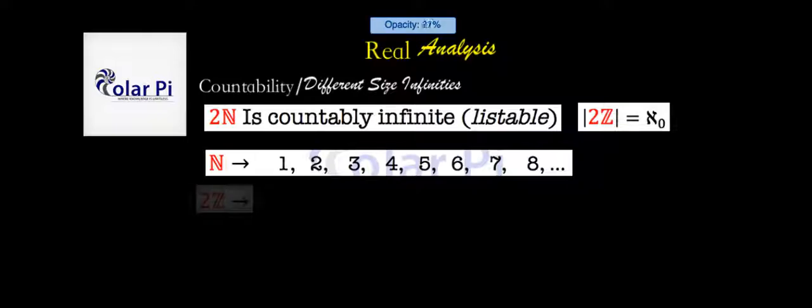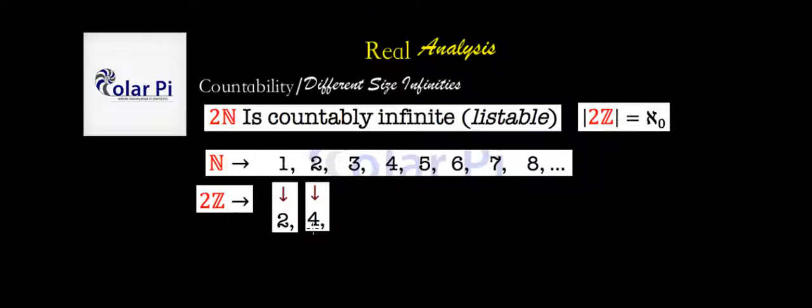Here's how I'll show that my claim is true. The only thing we have to do is put the positive even numbers in one-to-one correspondence with the natural numbers. Let's start with 2 and list it under the first natural number, 1. Then we list the second positive even number, 4, under the second natural number, 2.